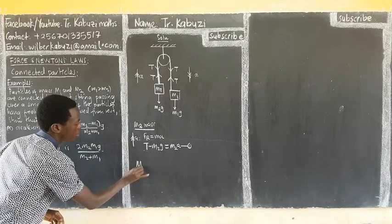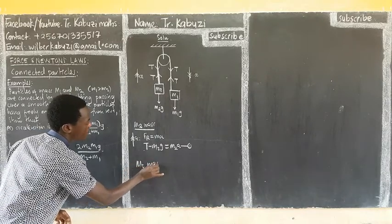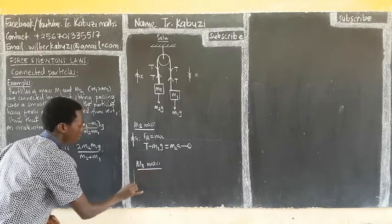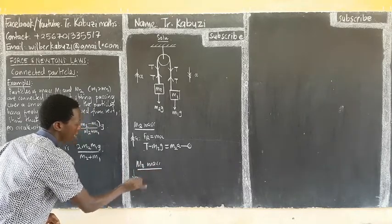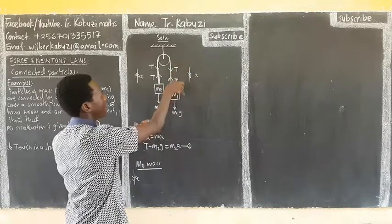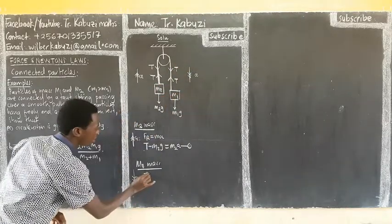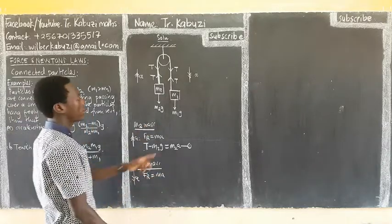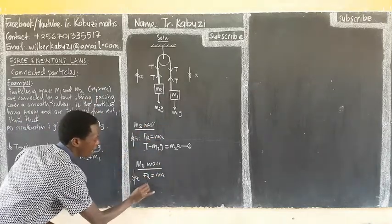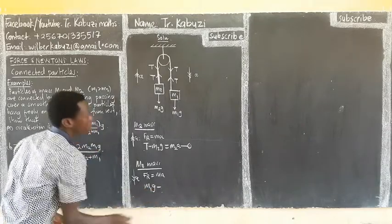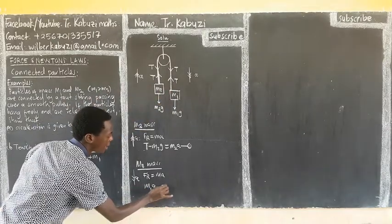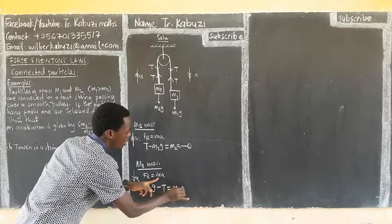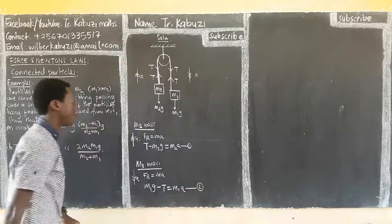If we come now to M1 mass. You see the direction of the acceleration is in that order. So meaning, our resultant force is going to be in the same direction as the acceleration of the particle. So meaning, our resultant force is going to be M1g, now it's only, but it's being opposed by T, equaling to the mass, which is M1, then times a, and we call this equation 2.